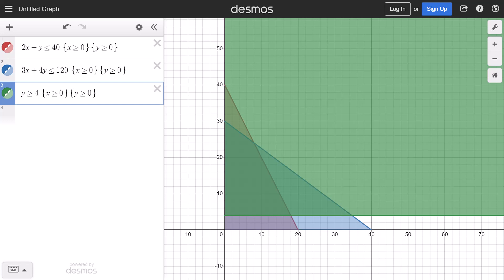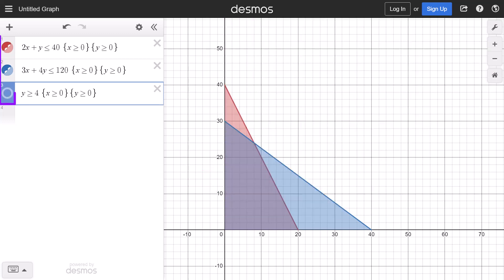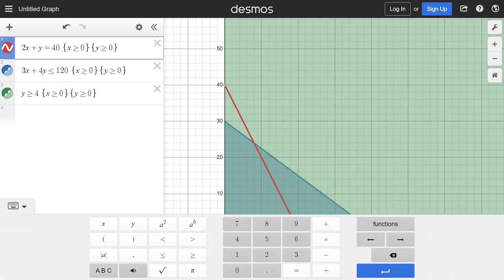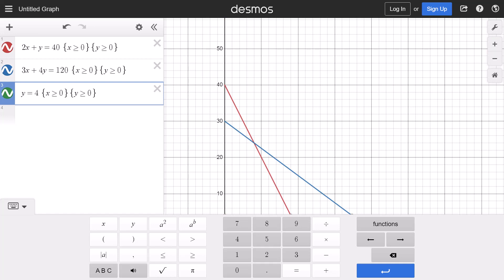Now I can see that the intersection of the three constraints is this region here. If you're not sure, you can hide one constraint at a time by clicking on the circles here to see what's left shaded. Since I now know where my feasible region is, I can change the constraint signs to equality to remove the shaded regions so I can better see the lines.